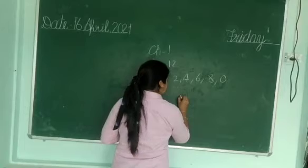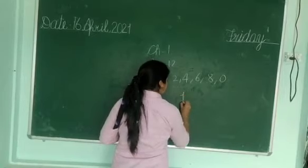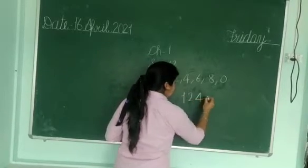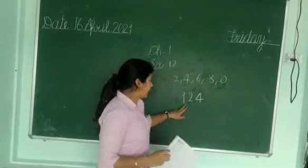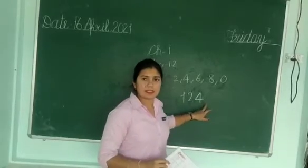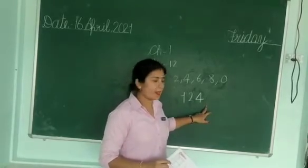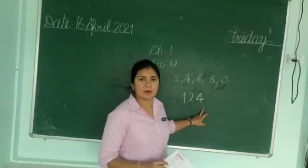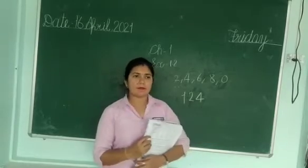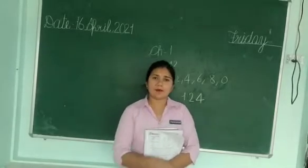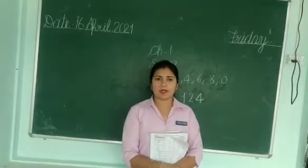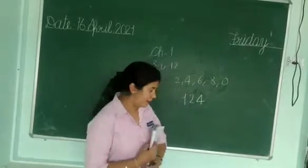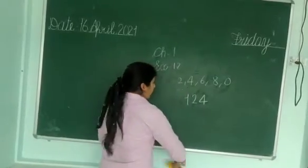For example, 124. In 124, what is at the ones place? 4. So this will be an even number. Even numbers are numbers that are also divisible by 2. Next are odd numbers.